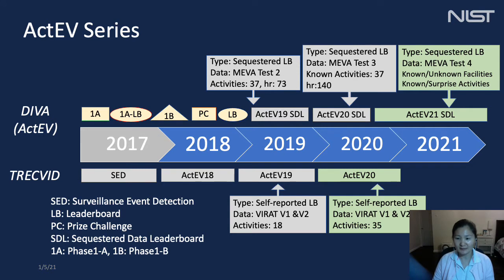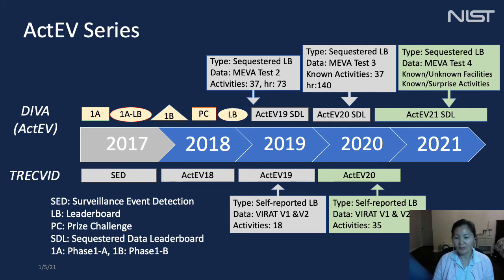The major differences between the two evaluations are evaluation types, datasets, and the number of activities. For track BEAT 20, we have a take-home leaderboard on the VIRAT dataset with 35 known activities. For ACTIV-21 SDL, we have a sequestered leaderboard evaluation on the MEVA test 4 dataset containing both known and unknown facilities, with 37 known and 10 different surprise activities.